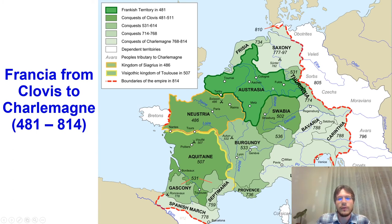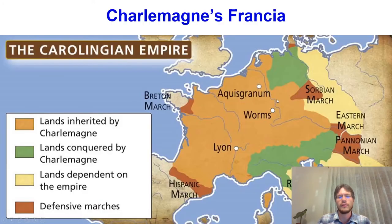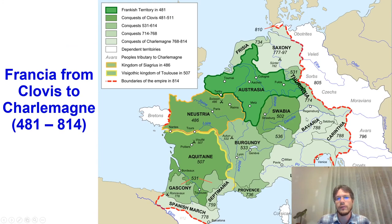You can see how Francia, the Frankish country, grew from the times of Clovis to Charlemagne, so from the Merovingian to the High Carolingian period. Charlemagne expanded Francia enormously—he added Saxony, Bavaria, the Lombard Kingdom, Corinthia, Gascony, and the Spanish March. He did quite a number on the neighbours of the Franks.